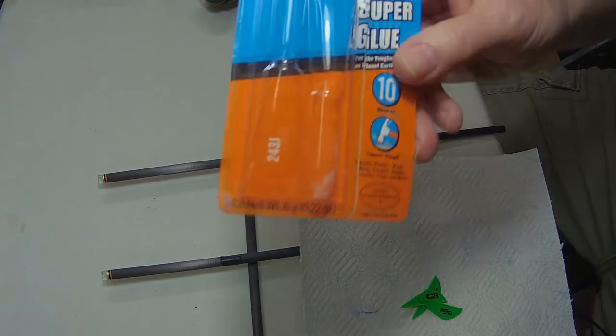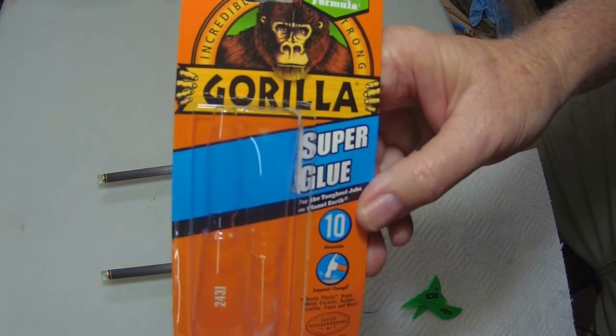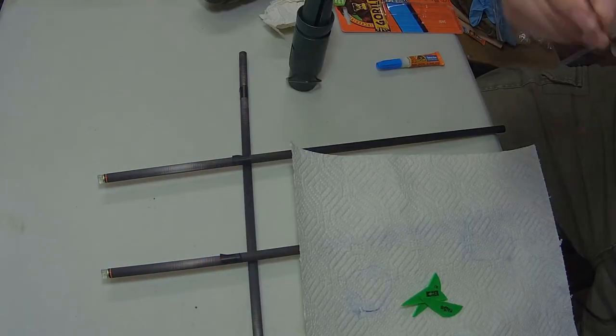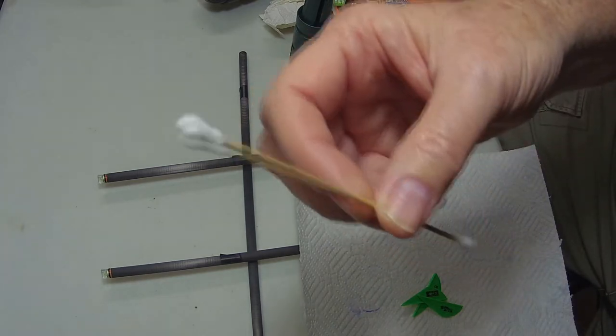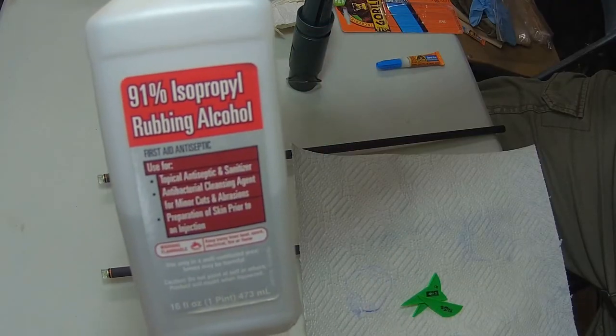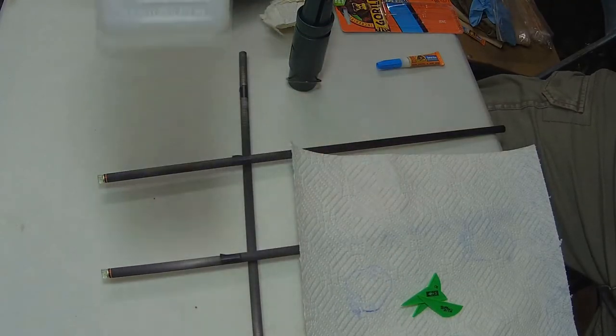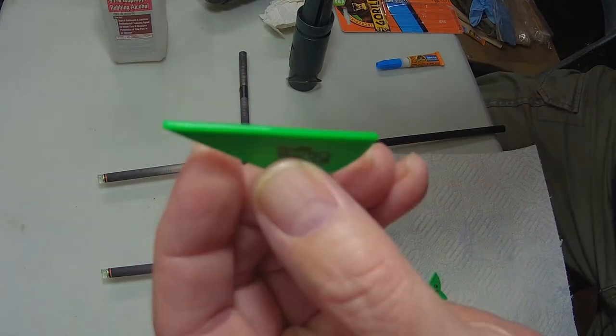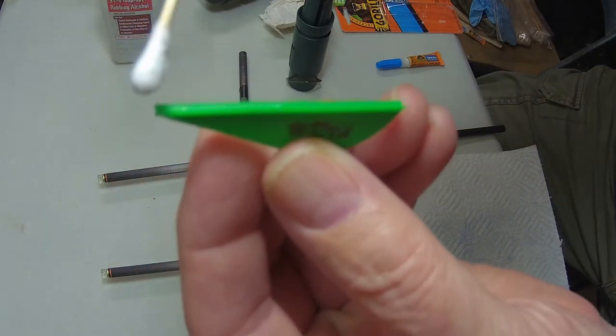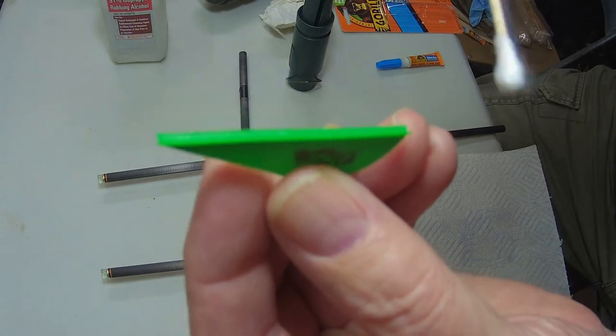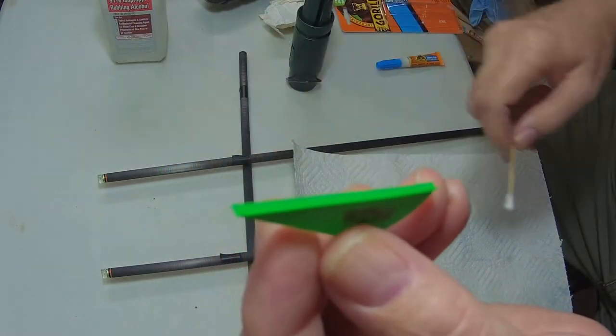And I've been using Gorilla Super Glue. You'll also want to have some Q-tips, 91% rubbing alcohol. That's what we'll use to clean the vane area that will be glued to the arrow shaft.